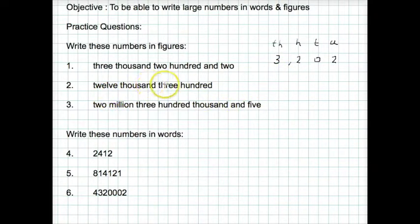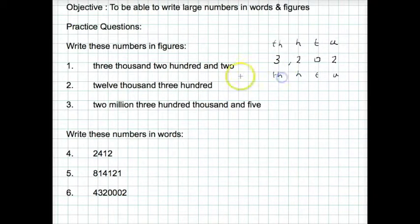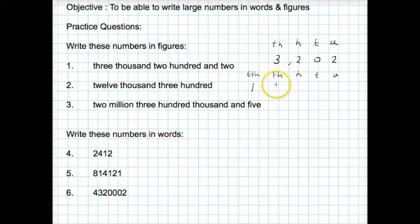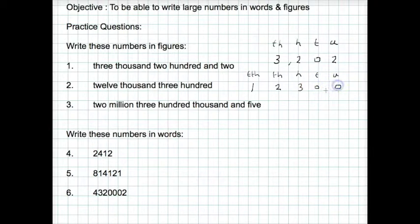Second one: 12,300. Again, if we write units, tens, hundreds, thousands — we're going to need another column here for tens of thousands. So this time we've got 12,000. 12 consists of a 10 and two units. We've got 300, but no tens, no units. So our answer is 12,300. You can put the comma to separate the thousands and the hundreds.